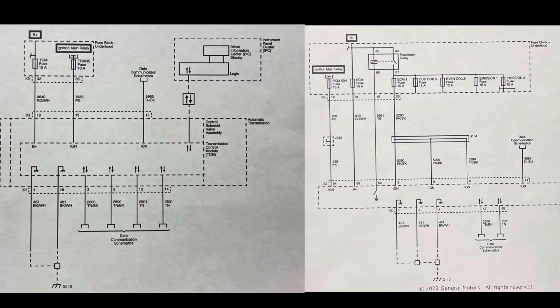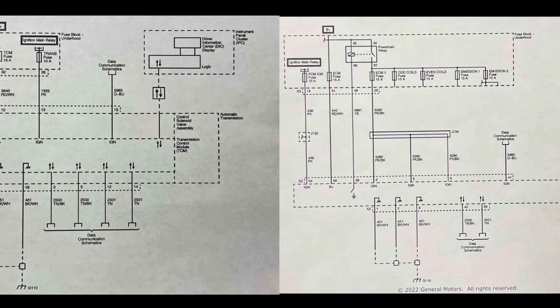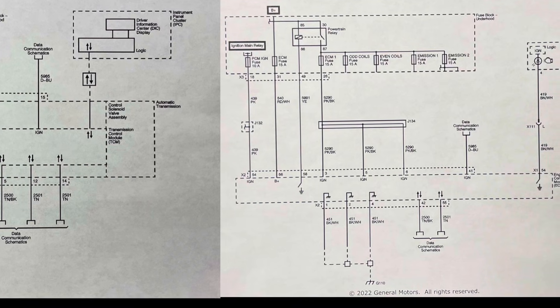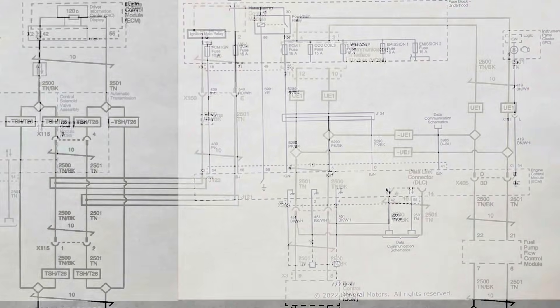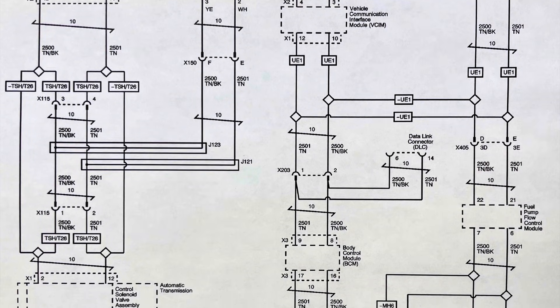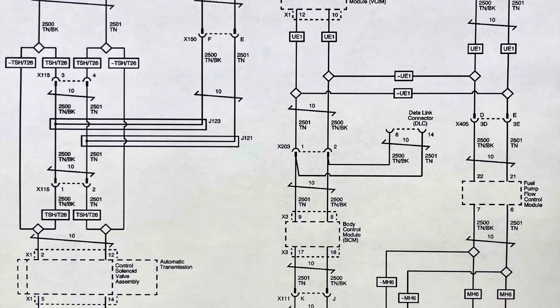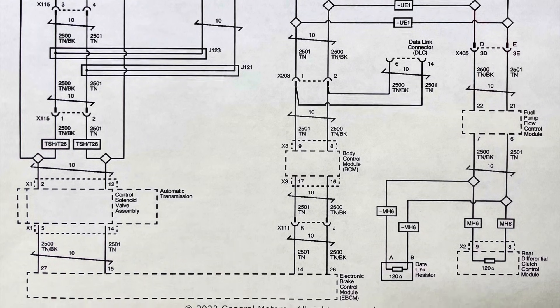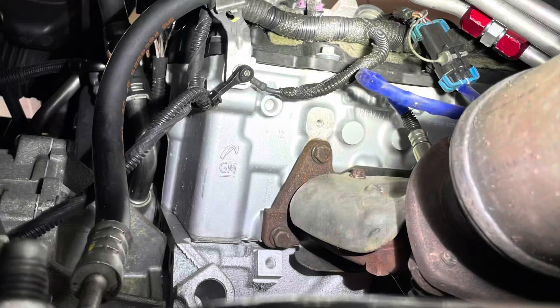The next step was to consult the wiring diagrams for both the ECM and TCM. I noticed they both receive an ignition power feed from the ignition main relay and both receive a common ground at G110. I skimmed the high-speed GM LAN diagram, but felt the problem lies elsewhere since most of the other modules are still communicating. During that earlier health check, I immediately noticed the engine has had some sort of recent major work done, so I needed to go check out that G110 ground.